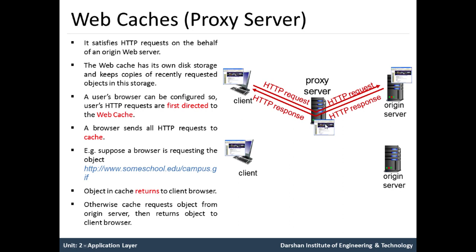If the Web Cache does not have the object, the Web Cache opens a TCP connection to the origin server — that is, www.sumschool.edu. The Web Cache then sends an HTTP request for the object into the cache to the server over that TCP connection.